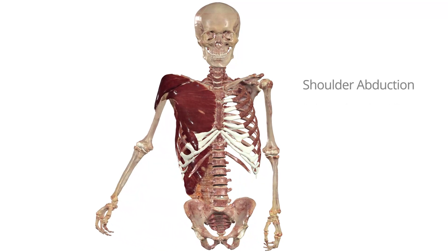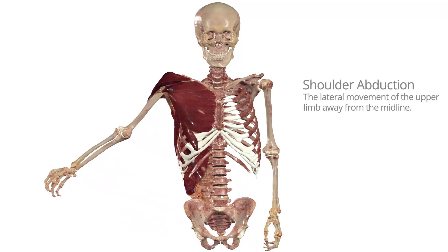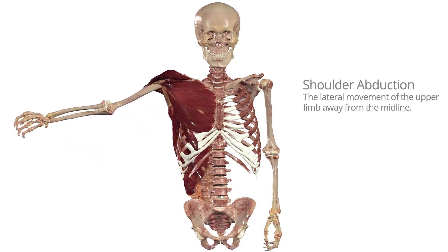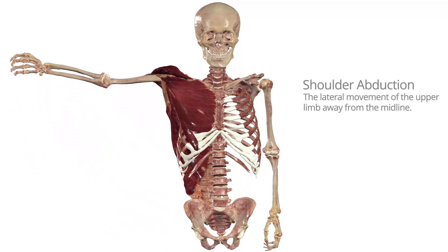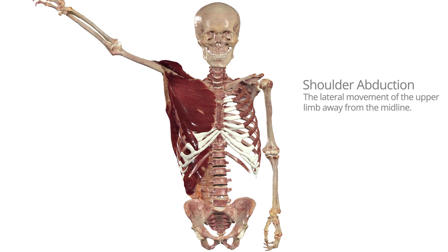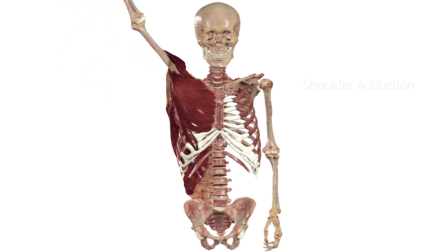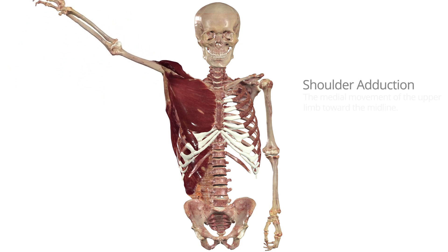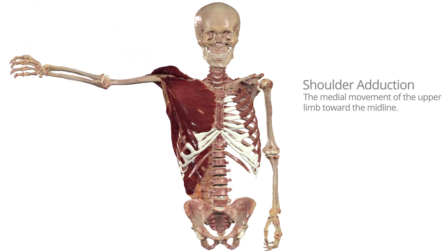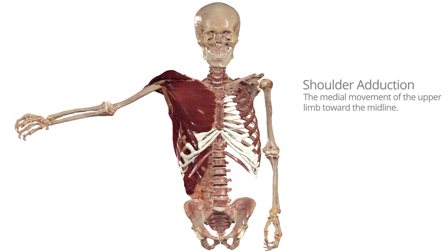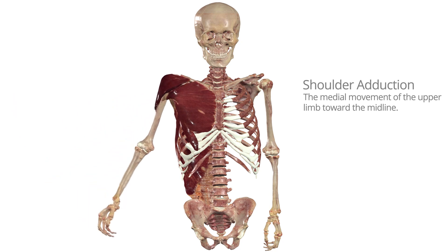Shoulder abduction is the lateral movement of the upper limb away from the midline. Shoulder adduction is the medial movement of the upper limb toward the midline.